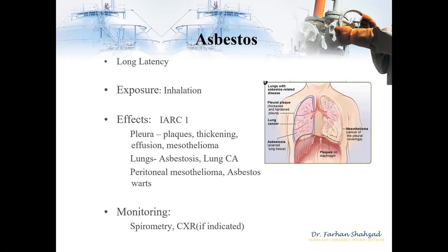With asbestos-related diseases, what we normally see includes mesothelioma, pleural thickening or pleural plaques, pleural effusion — which is thickening of the lining of the lungs — inflammation around the lungs, and cancer of the lungs or even the larynx.